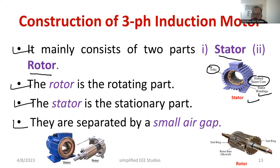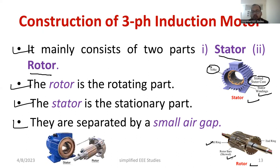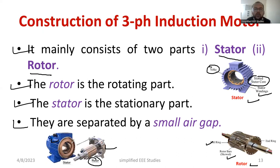When I talk about the rotor, there are different varieties. You can see the copper bars connected between end rings — the rotor bar is arranged in a skew symmetry fashion. In another view, you can see the outer covering, which is the stator where three-phase supply is given, and the moving part is the rotor — a mechanical moving part.